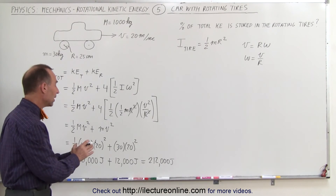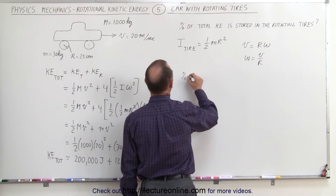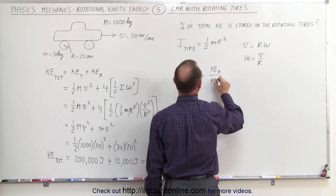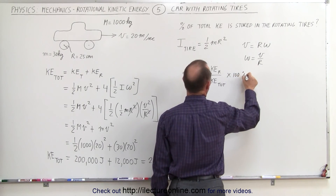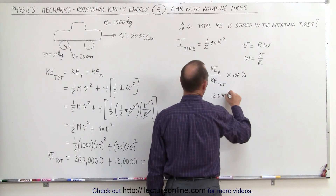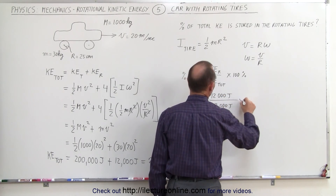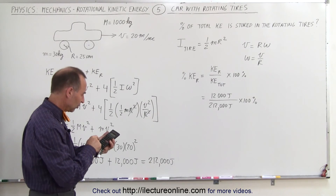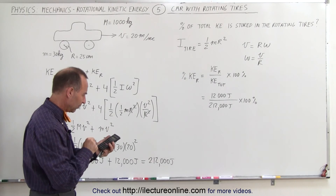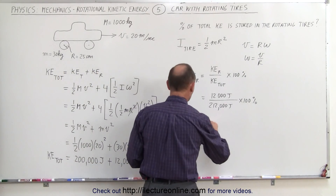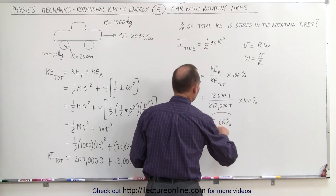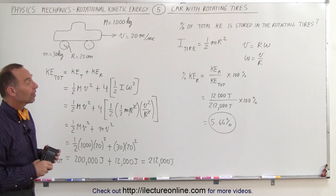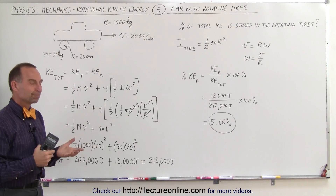Now let's find what percentage is made up of the rotational kinetic energy. The percent rotational kinetic energy equals the rotational kinetic energy divided by the total kinetic energy times 100%. That gives us 12,000 divided by 212,000 times 100%, which is 5.66%. So a little over 5% of the total energy of the moving car is due to the rotating tires, and about 94% is due to the forward translational motion of the car. And that's how that's done.